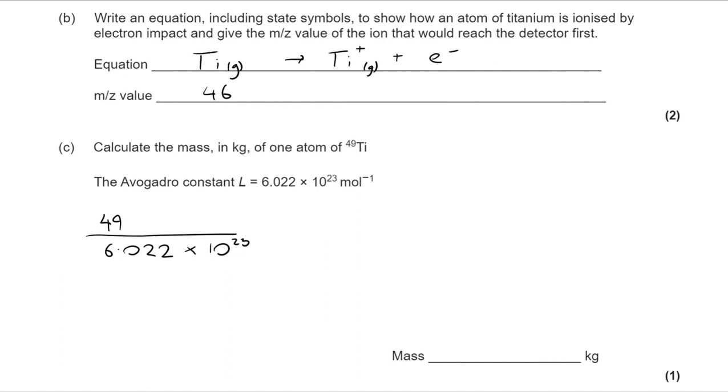But we want it in kilograms. So we need to incorporate that into our calculation. So it's not 49 over Avogadro, it's 49 over 1,000 over Avogadro. And that takes you to your value of 8.137 by 10 to the minus 26.